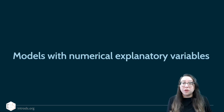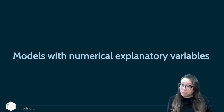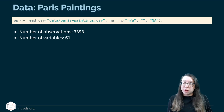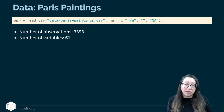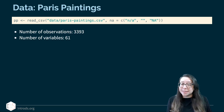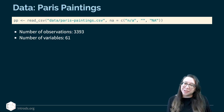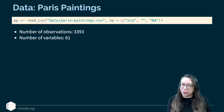We're going to start with models with numerical explanatory variables. We're working with the Paris Paintings dataset, where we have 3,393 observations from the auction catalogs for these paintings, and we have information on 61 variables. We know the price they sold at, but we also know their heights and their widths, and that's what we're starting with first.